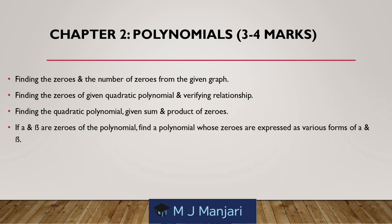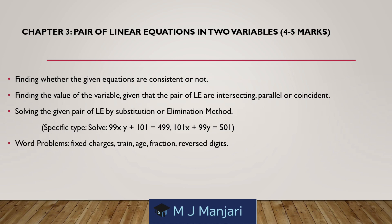Chapter 2: Polynomials — 3 to 4 marks. Expected questions: finding the zeros and number of zeros from the graph; finding the zeros of a given quadratic polynomial and verifying the relationship; finding the quadratic polynomial given sum and product of zeros; if alpha and beta are zeros of a polynomial, find a polynomial whose zeros are expressed as various forms of alpha and beta. Chapter 3: Pair of Linear Equations in Two Variables — 4 to 5 marks. Topics include: finding whether the given equations are consistent or not; finding the value of the variable given that the pair of linear equations are intersecting, parallel or coincident; solving the given pair of linear equations by substitution or elimination method; and word problems like fixed charge, train, age, fraction, and reverse digits.